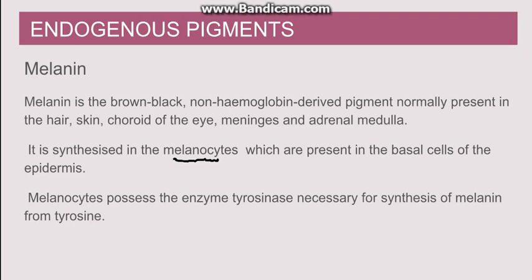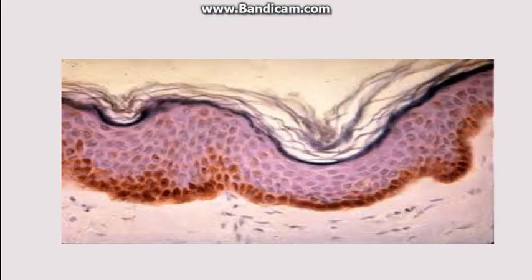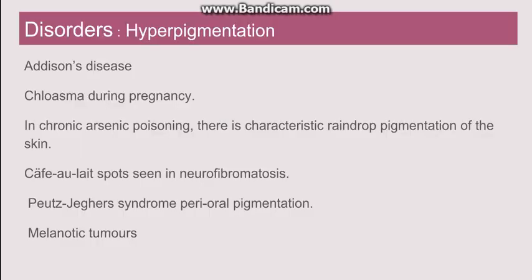We can see here the basal layer of the epidermis where the melanocytes are present. These melanocytes have a special enzyme known as tyrosinase, which leads to the production of melanin from the amino acid tyrosine. Now going to the disorders associated with melanin production.